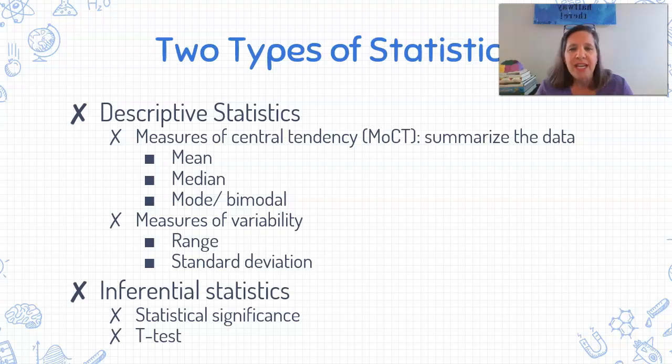Then the second type of statistics that researchers use are inferential statistics. And there's a couple of different types here that we're going to learn about as well. Statistical significance and the t-test.